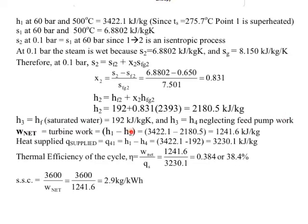So we get the turbine work from h_1, 3422 kJ/kg. But now we have another enthalpy h_2, different from our example 1. We get the turbine work done as 1241 kJ per kilogram. Heat supplied now is exactly the same as example 1, 3230.1 kJ per kilogram.